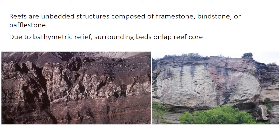Reefs have a unique stratigraphic expression: they show up as large, unbedded blobs of carbonate in otherwise layered or bedded strata. They're unbedded because of their construction from an irregular organism framework — the organisms build on top of one another rather than forming layers like normal sediment. Both true reefs and mud mounds have relief above the seafloor, so surrounding beds will on-lap, thinning and draping over the unbedded reef core.